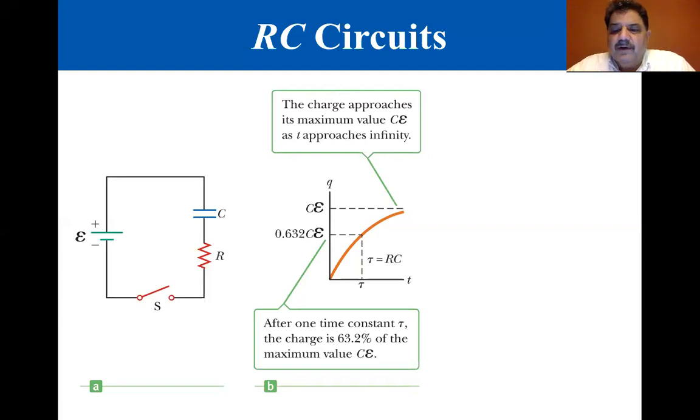Let's turn our attention to direct current circuits containing capacitors. In these circuits, the currents vary with time. Take a look at the series circuit in the figure. We can assume the capacitor is initially uncharged with the switch opened. After the switch is closed, the battery begins to charge the plates of the capacitor and the charge passes through the resistor. As the capacitor is being charged, the circuit carries a changing current.